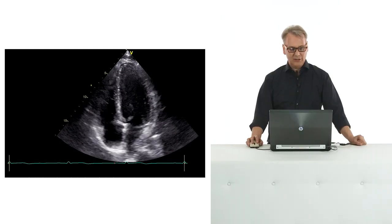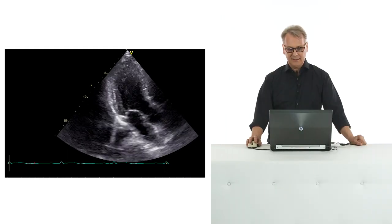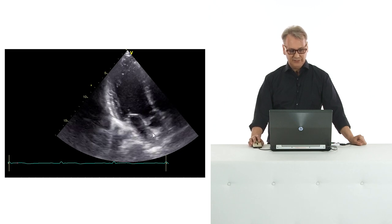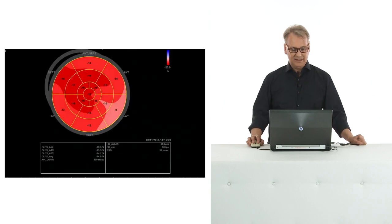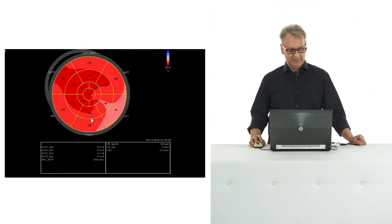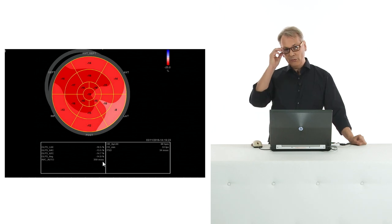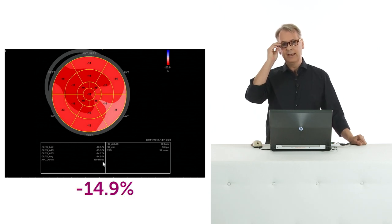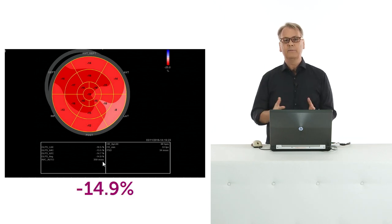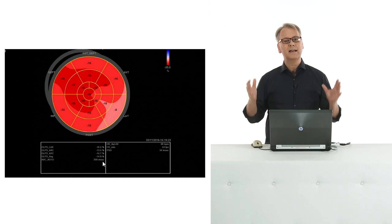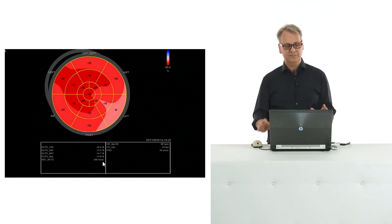Let me show you the apical long axis view again. Hypercontractile myocardium, diffusely reduced. Now let's turn to the strain pattern. At that time, we had an even lower strain of minus 14.9%, which documented that the patient has myocarditis. Of course, we also have an MRI study that showed late enhancement, so the diagnosis is very, very clear.